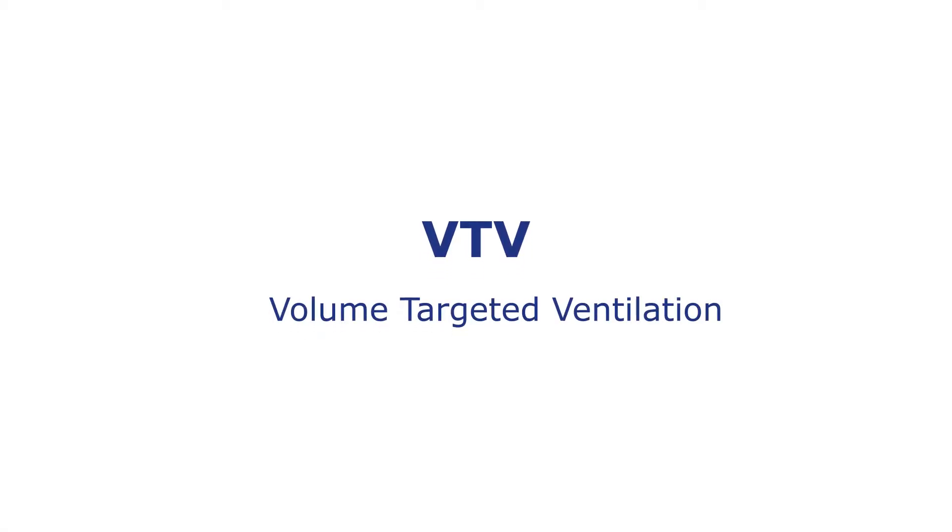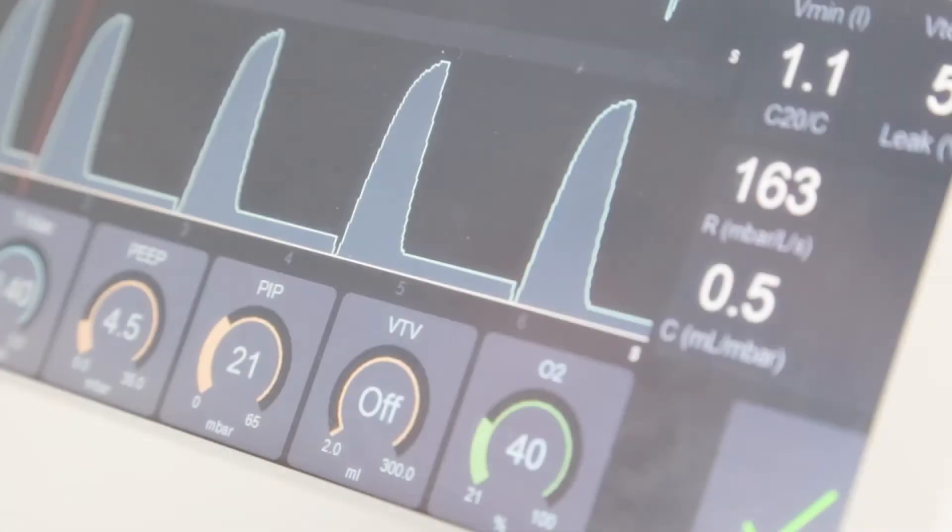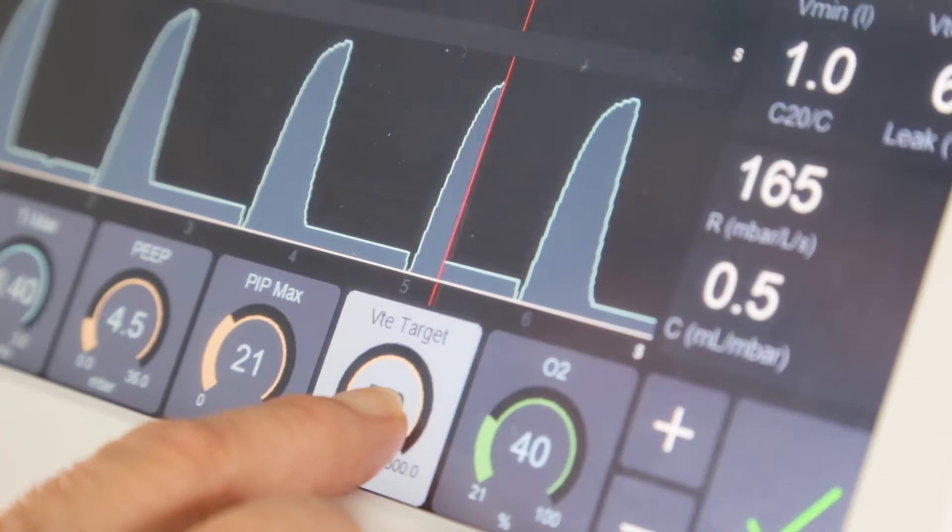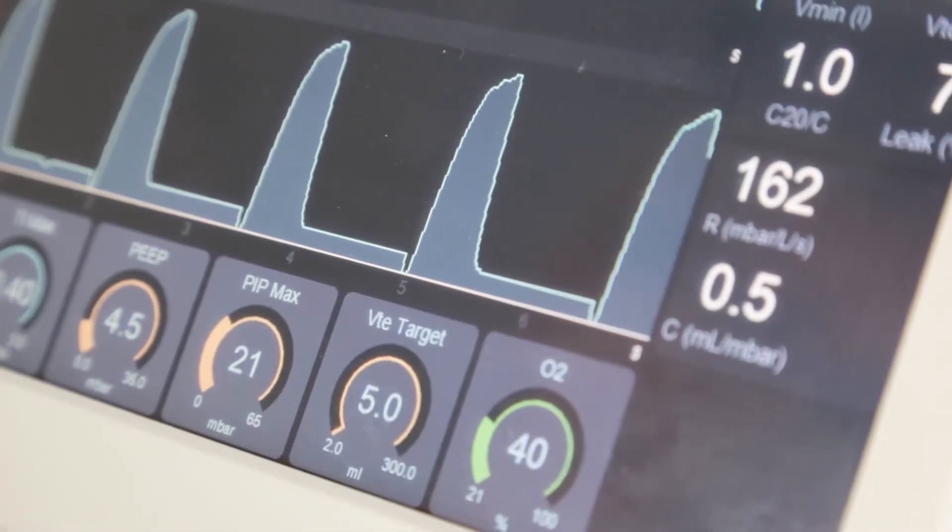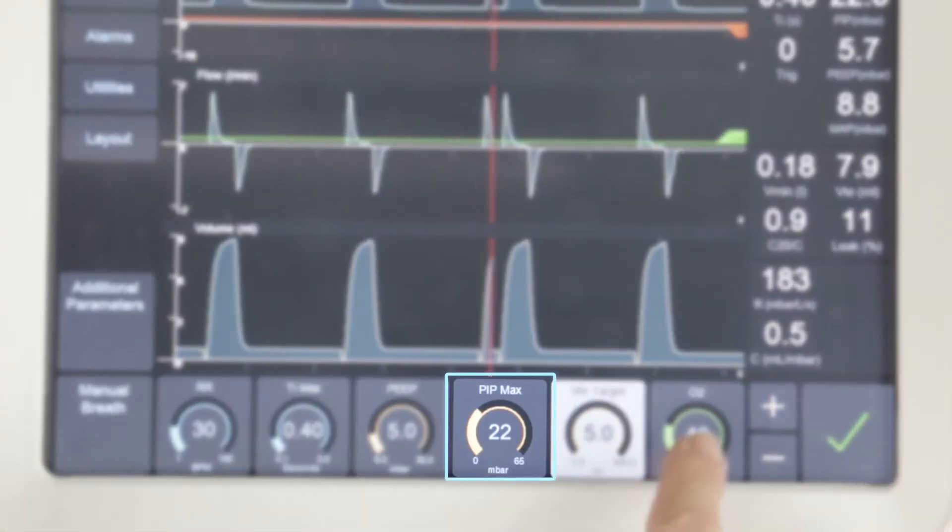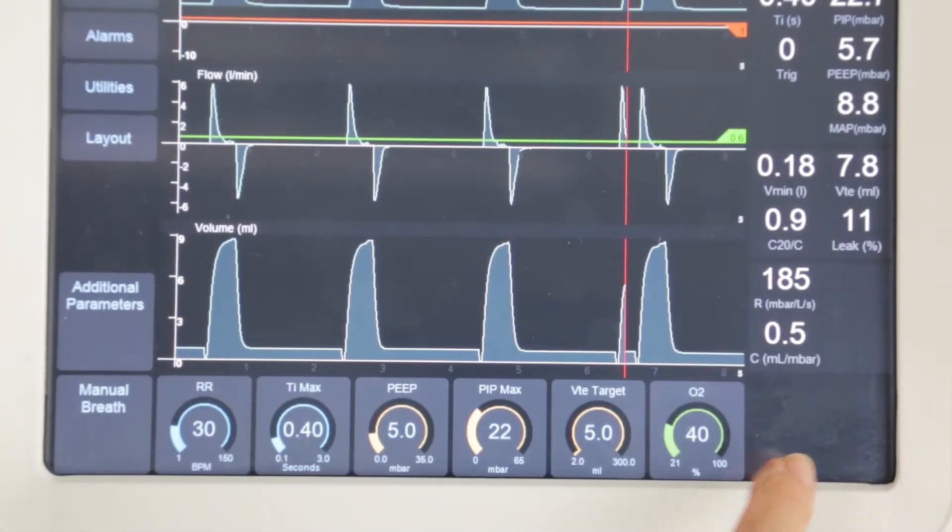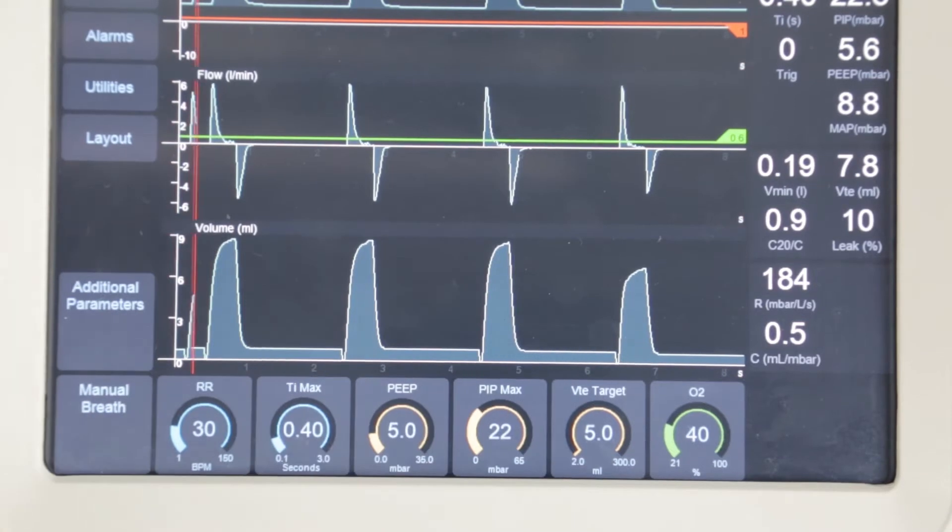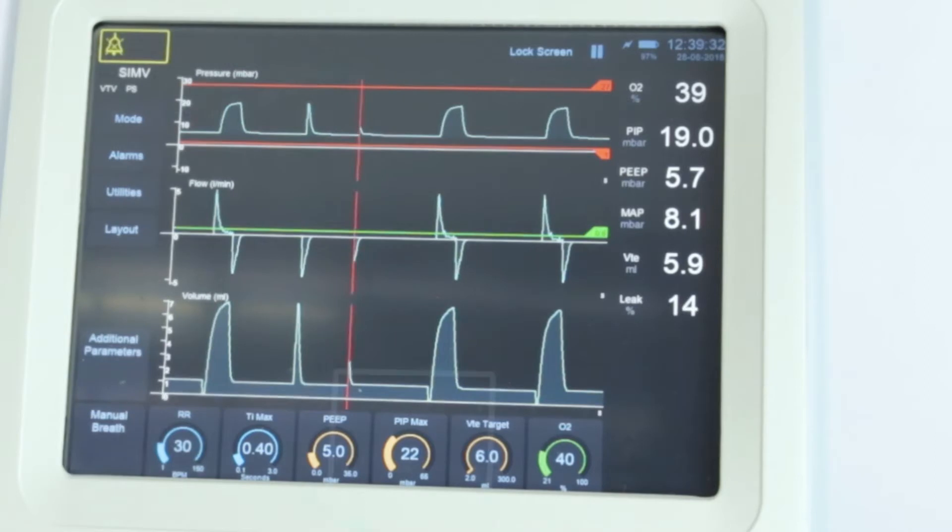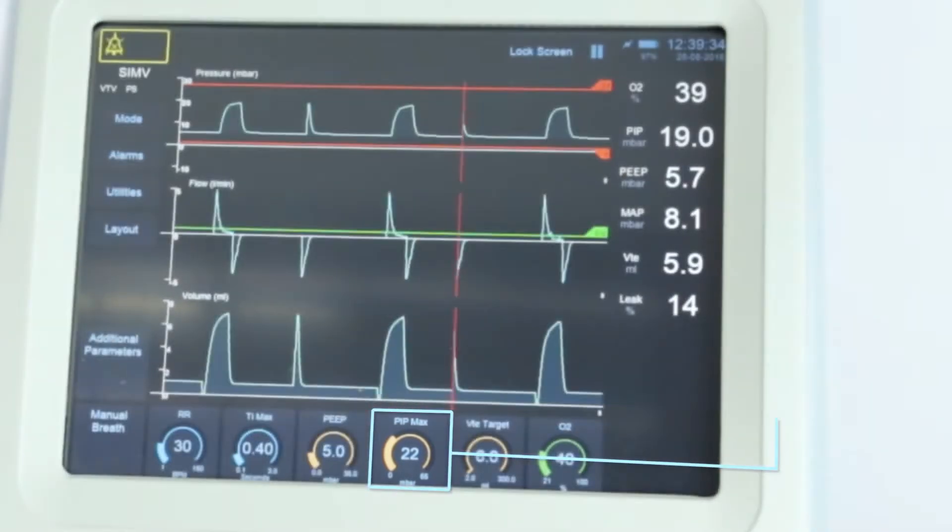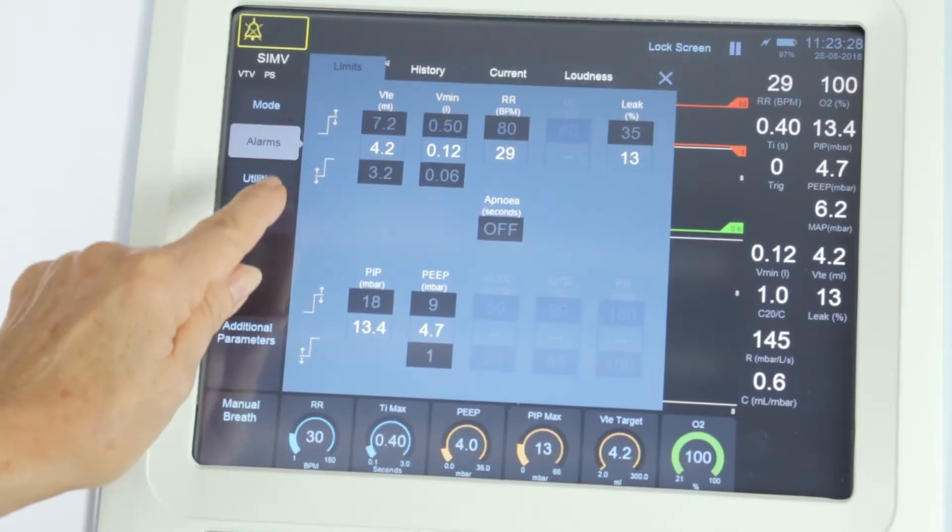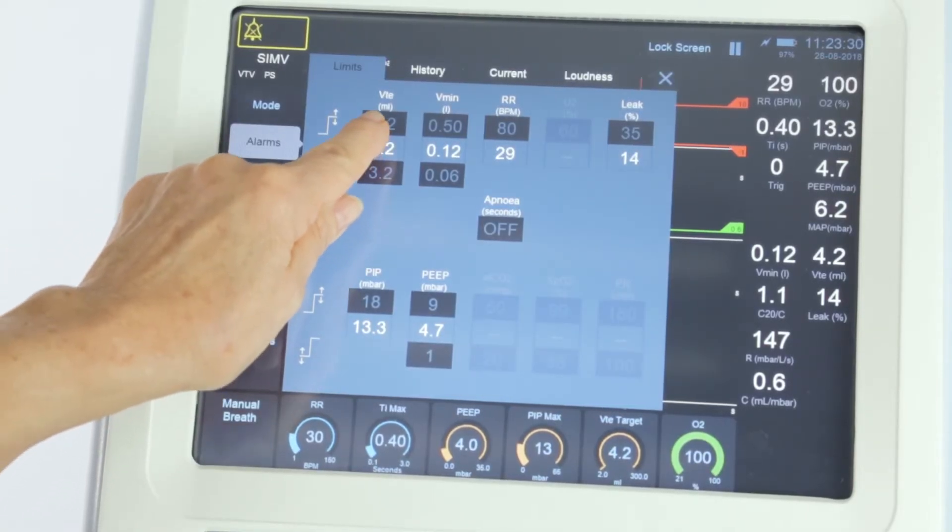Volume-targeted ventilation, VTV. Press and hold the VTV button and select an appropriate tidal volume and confirm. The PIP set originally now becomes the maximum PIP. The measured PIP is the amount of PIP needed to achieve the selected tidal volume. VTV will apply to the mechanical breaths only. The maximum PIP should be set no more than 5 millibar above the actual measured PIP. Set the upper and lower tidal volume alarms.